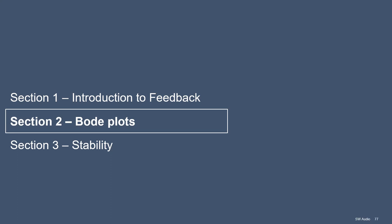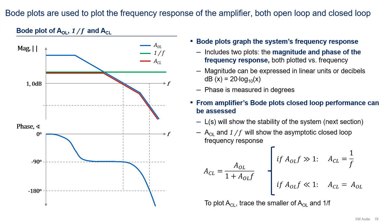Let's now discuss Bode plots, one of our most important tools in feedback system design. Bode plots are used to plot the frequency response of the amplifier system, both open loop and closed loop. They include two plots, the magnitude and the phase of the frequency response. Both plots are plotted versus frequency. Magnitude can be expressed in linear units or decibels, while phase is measured in degrees. One key feature of Bode plots is its ability to assess the amplifier's closed loop performance from the open loop characteristics. For stability, we will look at the loop gain L(s) as we shall cover in the next section.